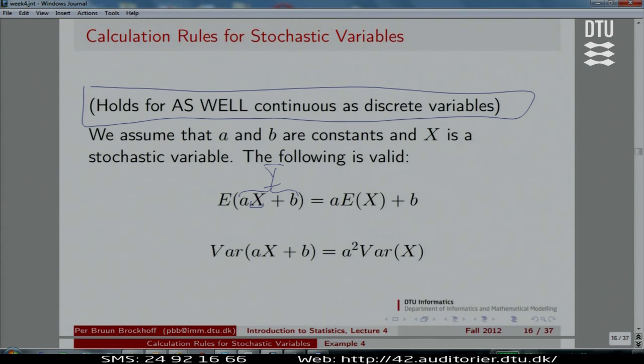which is a simple linear function of X, where small a and b are just constants. These are not random numbers. It's only X which is random. a and b are fixed constants.